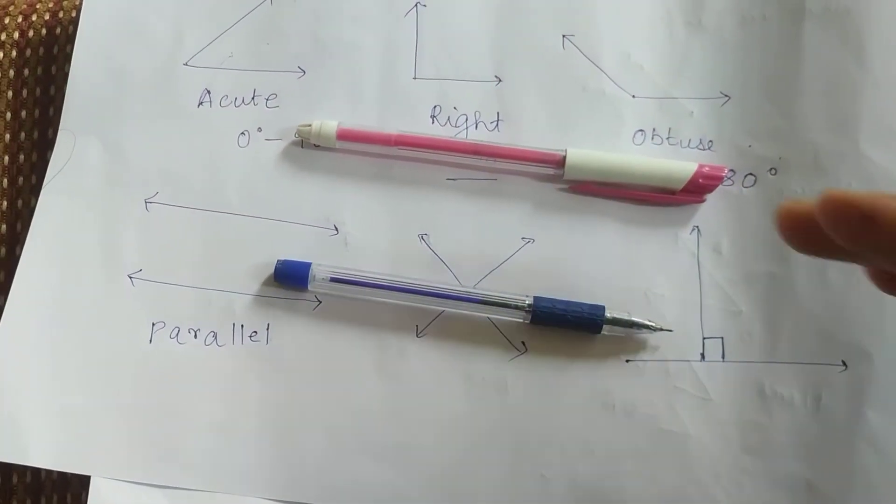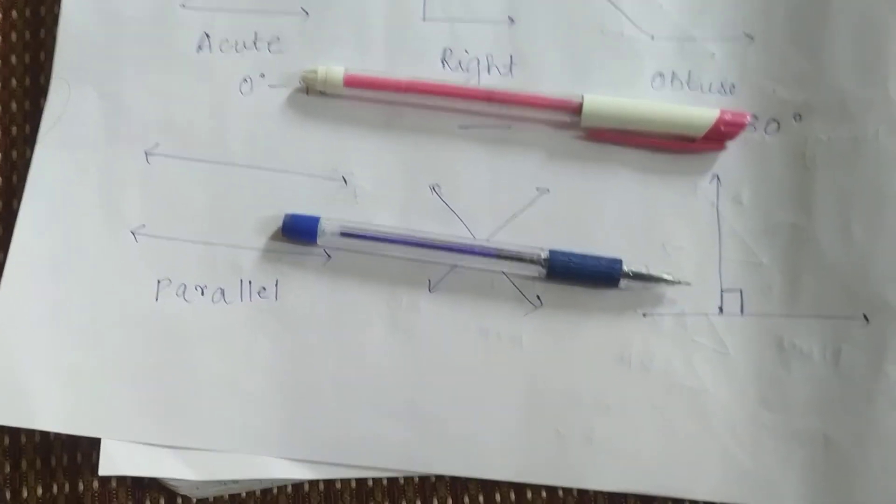So these are called parallel lines. If you see these tiles, the top line of this tile and the bottom line are completely straight. They will never meet one another. So they are called parallel lines.